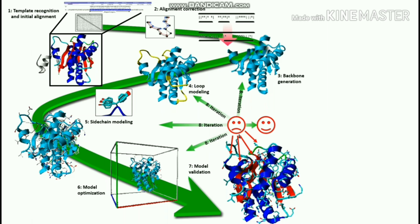This prediction of structure is based upon a similar structure of protein, that is the template. In homology modeling, 8 steps are involved: Template Recognition and Initial Alignment, Alignment Correction, Backbone Generation, Loop Modeling, Sidechain Modeling, Model Optimization, and Model Validation. If the model is not stable, do an iteration step.